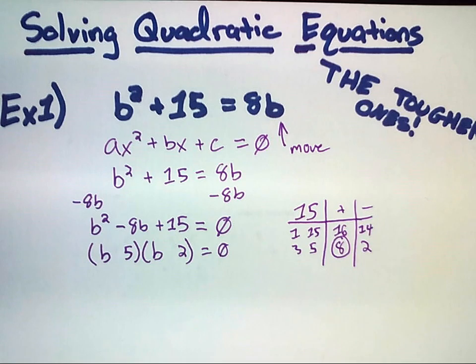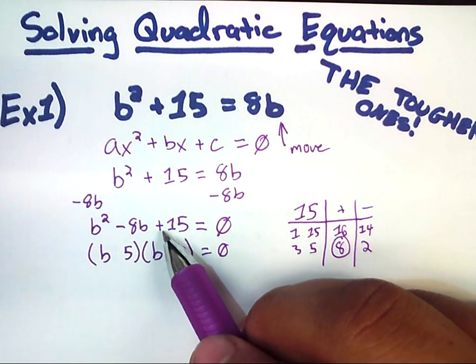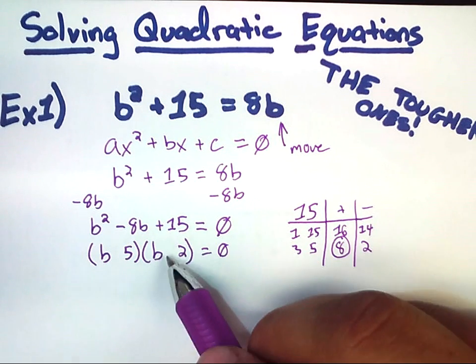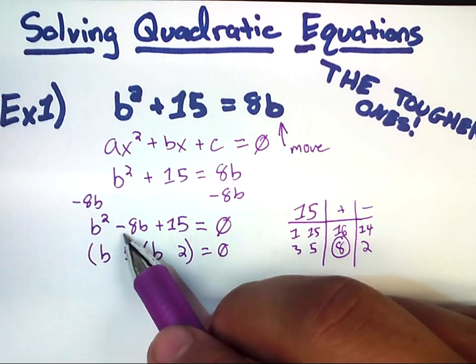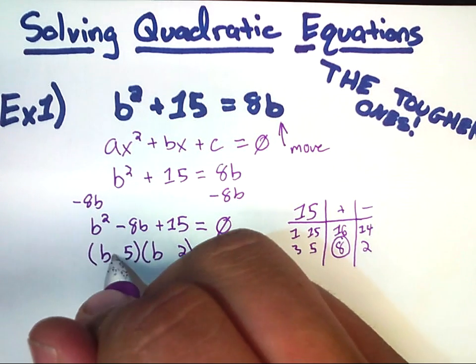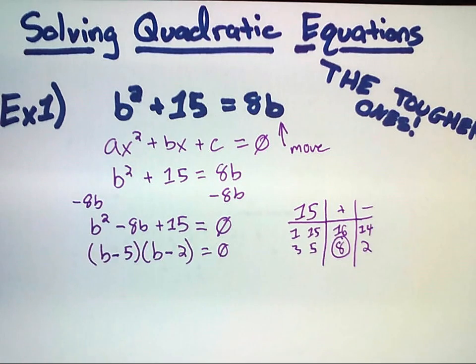Now, we've got to deal with the signs. Since it multiplies to a positive, they're either both positive or both negative. However, since the middle term is negative, that means these are both negative. And the final step, of course, we need to solve exactly for b.